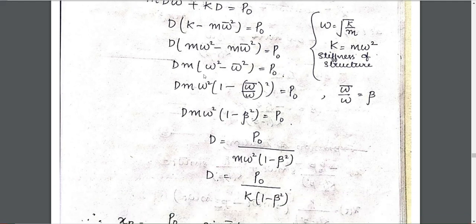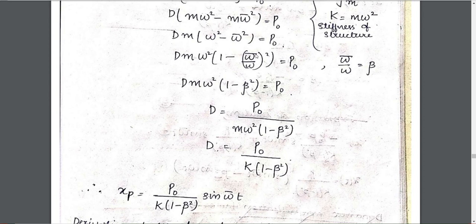We replace omega squared and introduce the term (1 minus omega_bar by omega) whole squared in brackets. Substituting, we get D equals p0 divided by m * omega_squared times (1 minus beta_squared). Equivalently, D equals p0 divided by k times (1 minus beta_squared), replacing m * omega_squared by k.